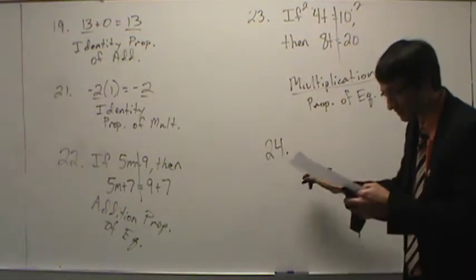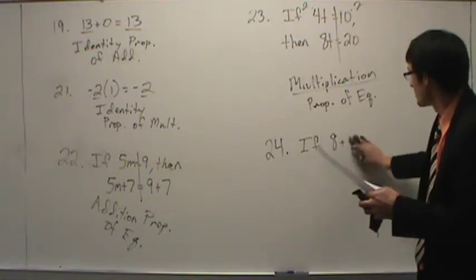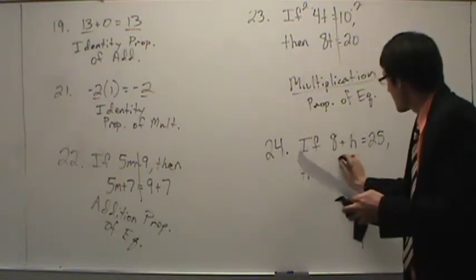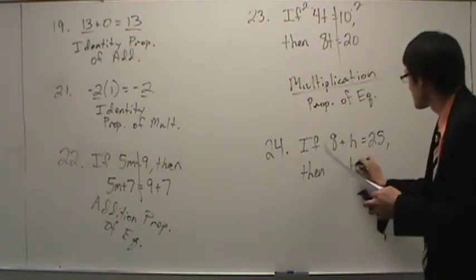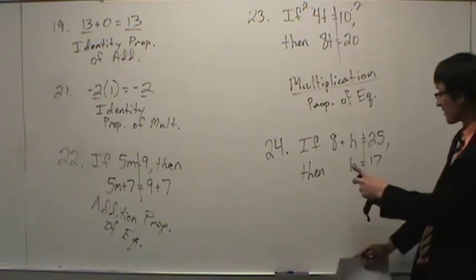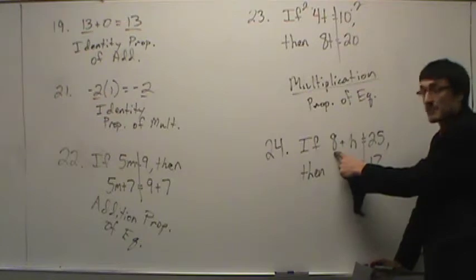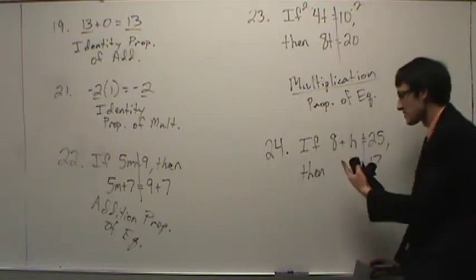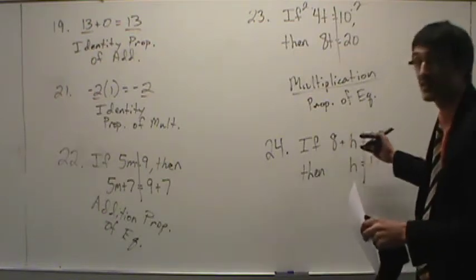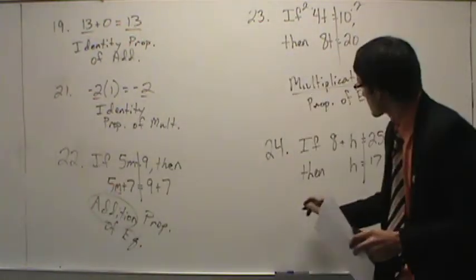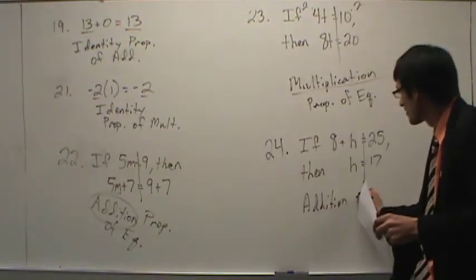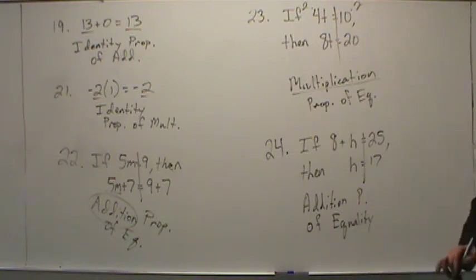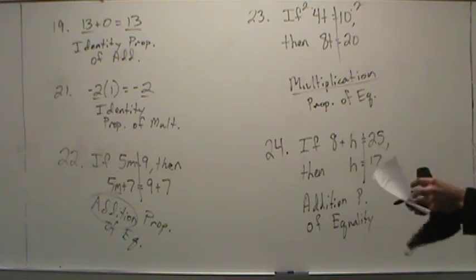Number twenty-four, the last problem: if eight plus h equals twenty-five, then h equals seventeen. What happened? Eight was being added on the left — now it's gone. Eight was subtracted from both sides: twenty-five minus eight is seventeen. Subtraction is the same as addition, so we call this the addition property of equality. And that's the practice quiz.